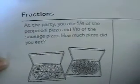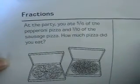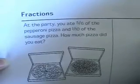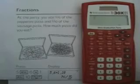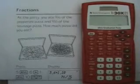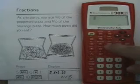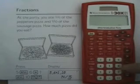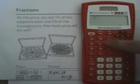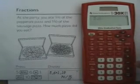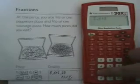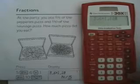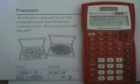Fractions. At the party, you ate 5 sixths of the pepperoni pizza and 1 tenth of the sausage pizza. How much pizza did you eat? You would enter the fractions exactly like you did the old calculator. You'll notice here that this is the ABC button to enter fractions. And so, how to solve this problem, we would go 5 ABC 6, which would represent 5 sixths, plus 1 ABC 10, and that would represent 1 tenth, which would give us 14 fifteenths.